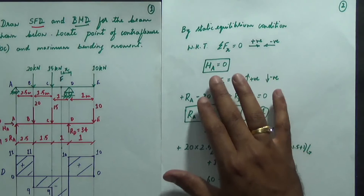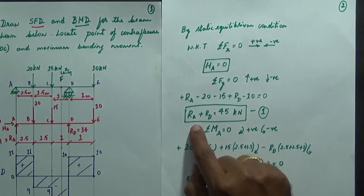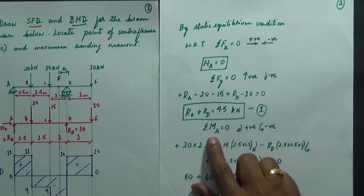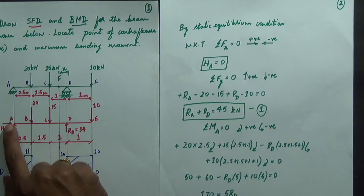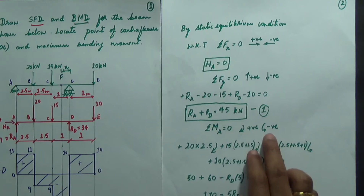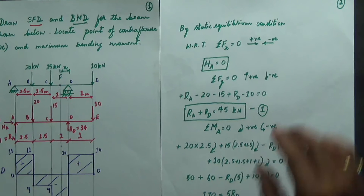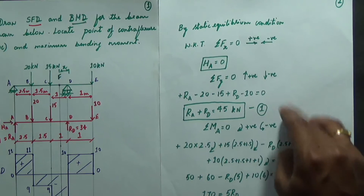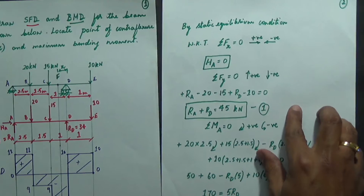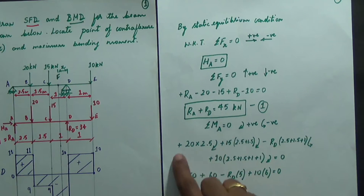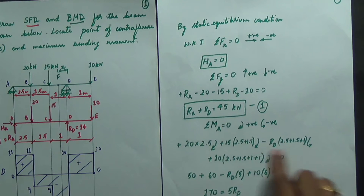From ΣFx = 0, HA = 0. From ΣFy = 0, RA + RD = 45. Taking bending moment at A equal to zero, the sign convention is clockwise positive and anti-clockwise negative. It is important to show this sign convention — it is very useful for the evaluator to confirm you have taken the right sign convention.